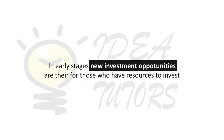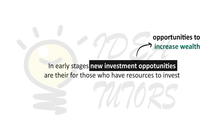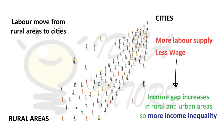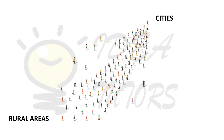According to the theory, in the early development of an economy, new investment opportunities increase for those who already have the capital to invest. This means that those who already hold the wealth have the opportunity to increase that wealth. There is also an influx of inexpensive rural labor to the cities, which keeps wages down for the working class because labor supply is more, thus widening the income gap and escalating economic inequality.